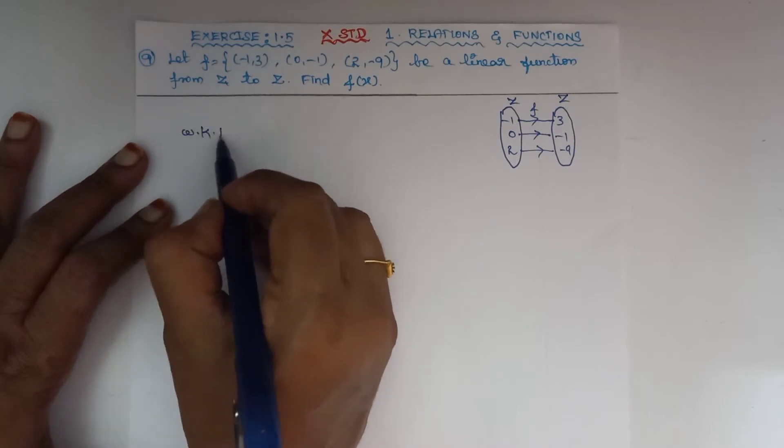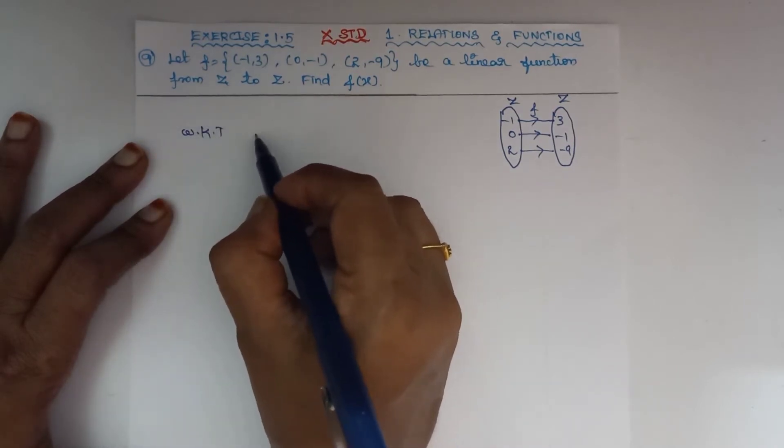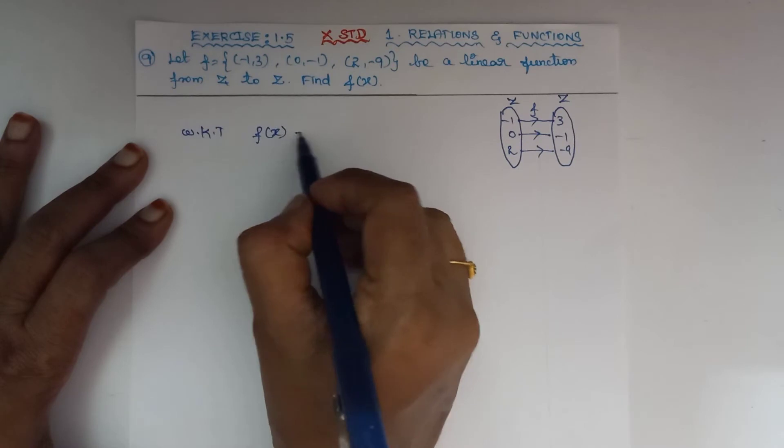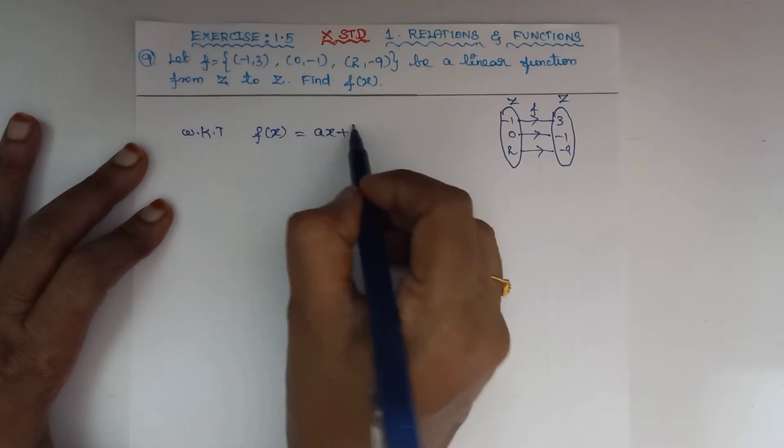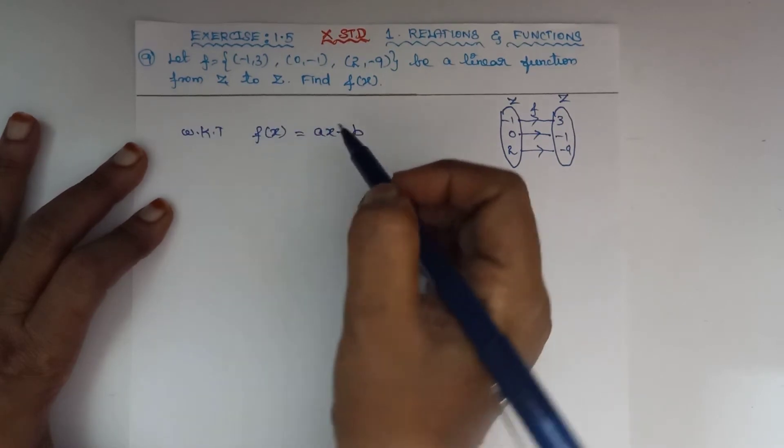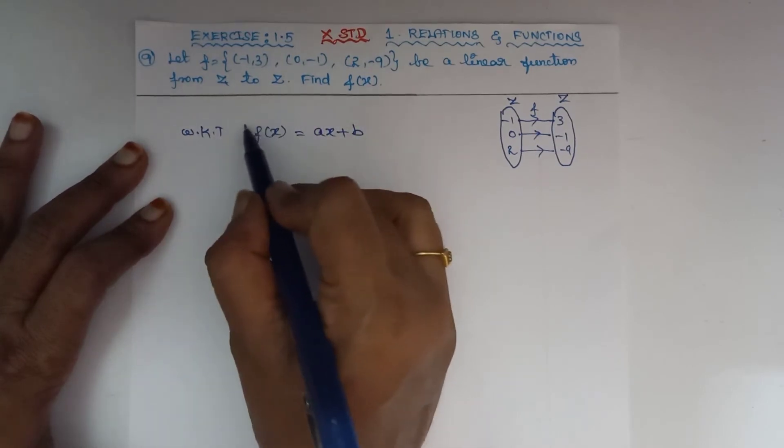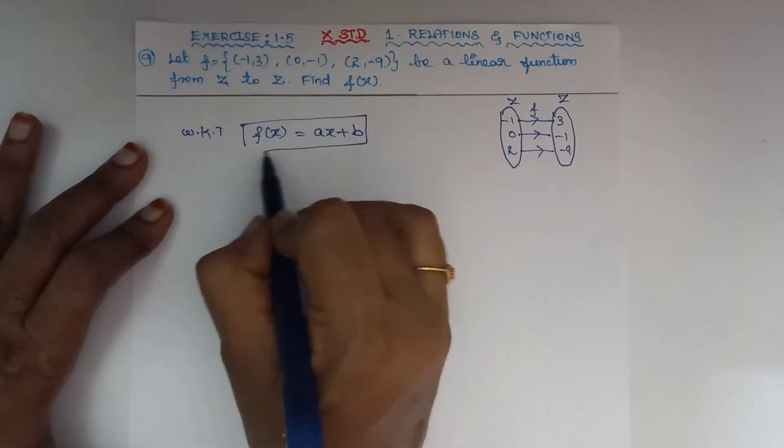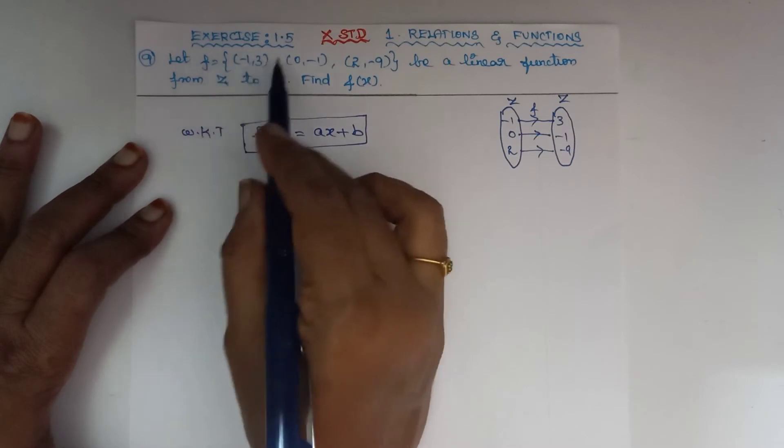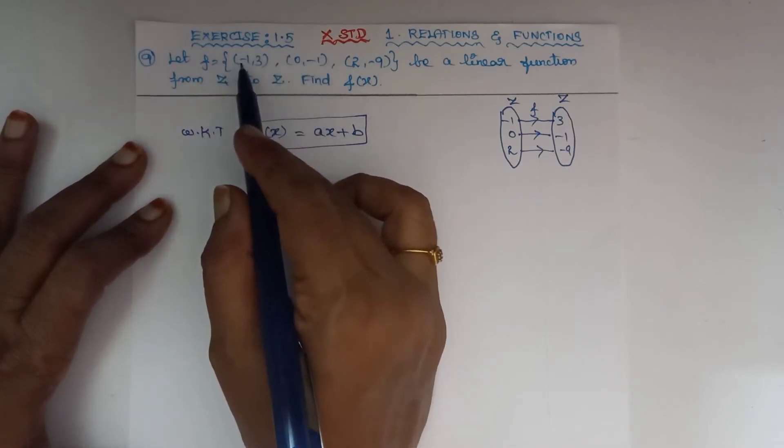We know that a linear function has the form f(x) = ax + b, where x has power 1. This is a linear function. The function is given in ordered pairs, and we need to substitute these values.